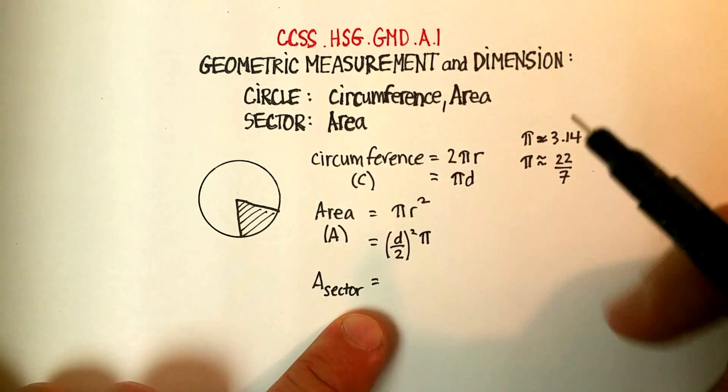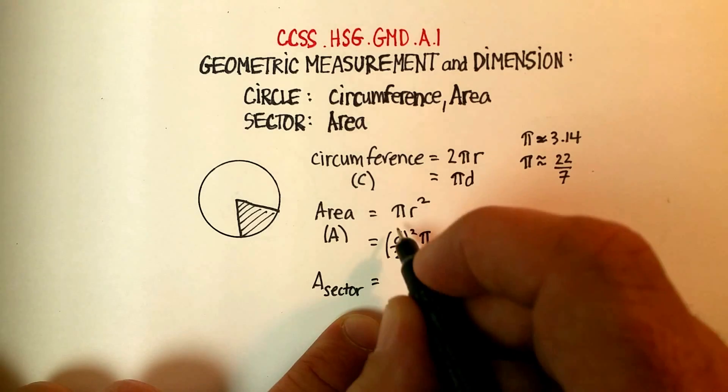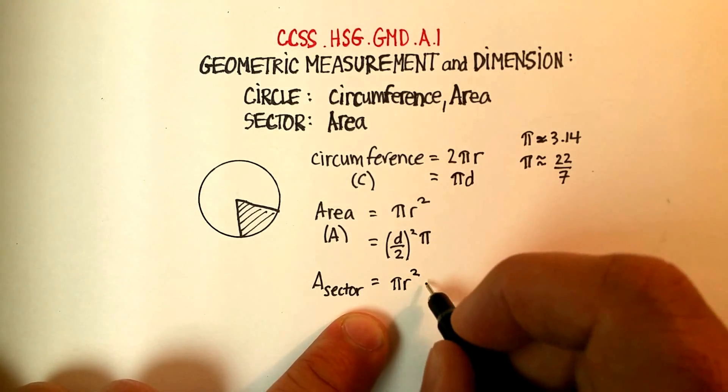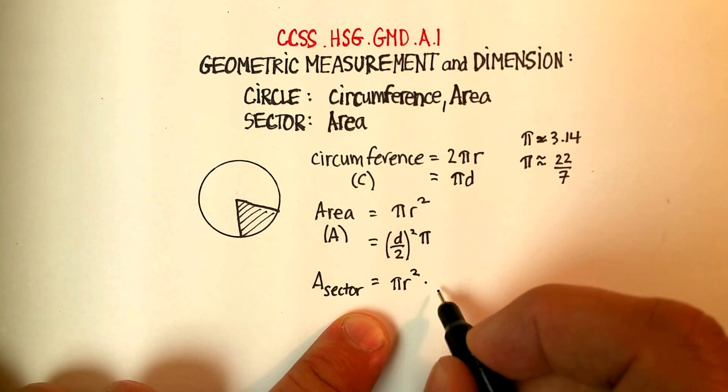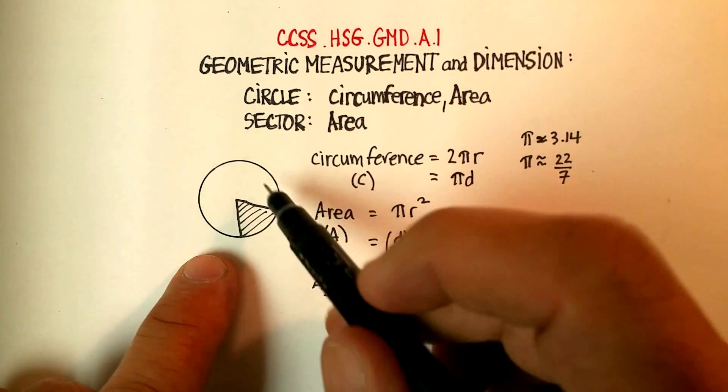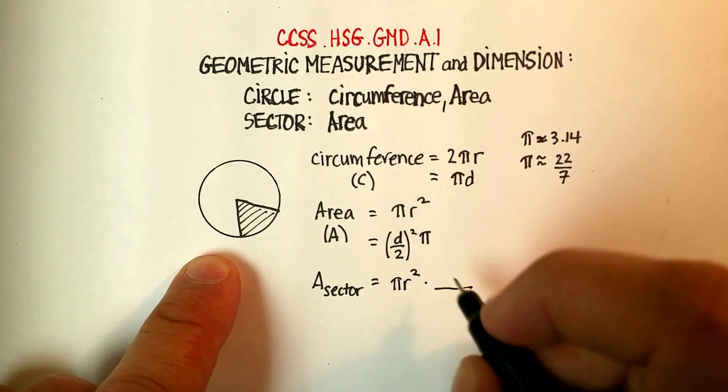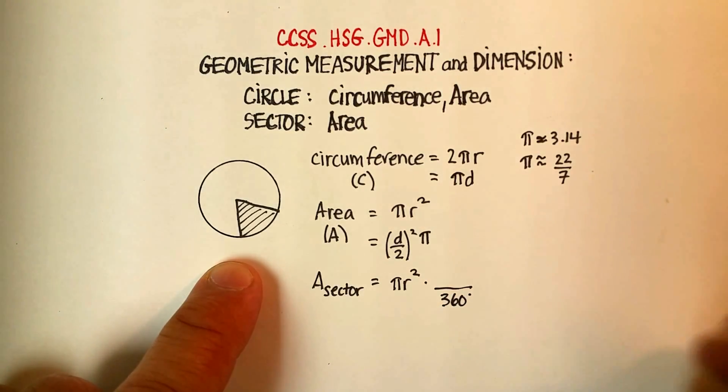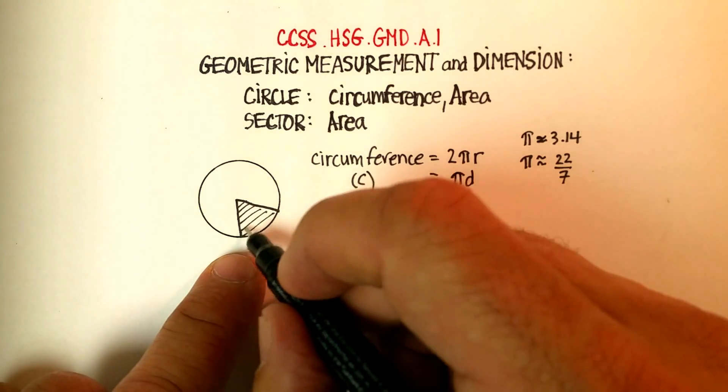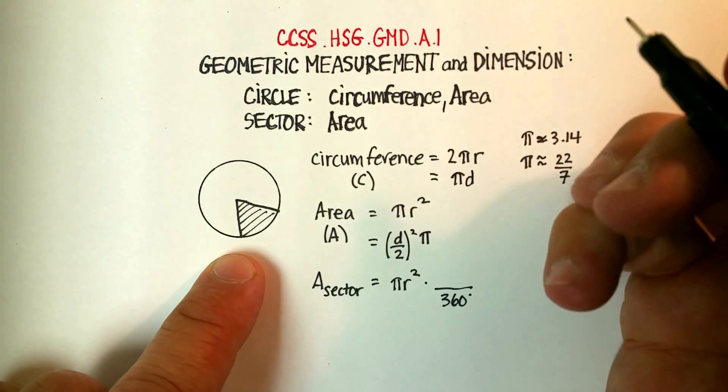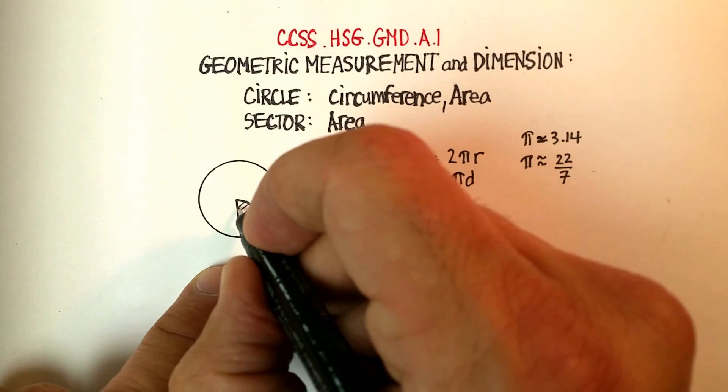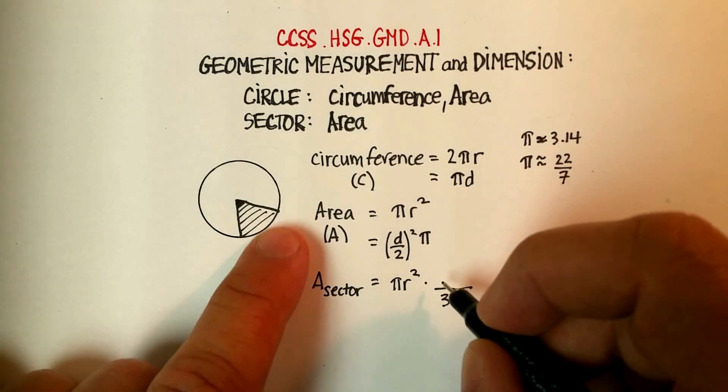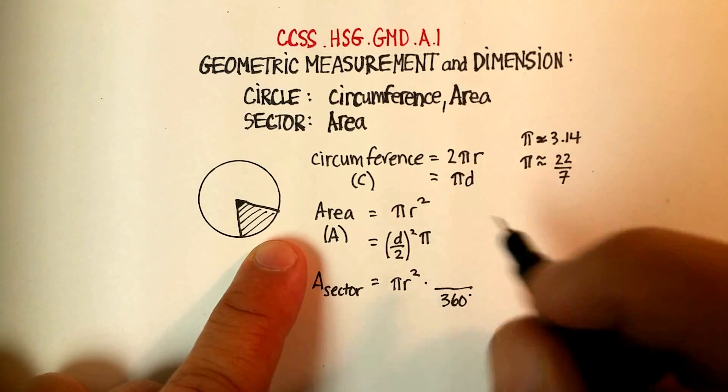You need to find the area of a circle. So we would just use πr², and then you would times that by, remember that a circle has 360 degrees. So 360 degrees, and then however many degrees make up this particular arc, or however many degrees make up the central angle of the sector.